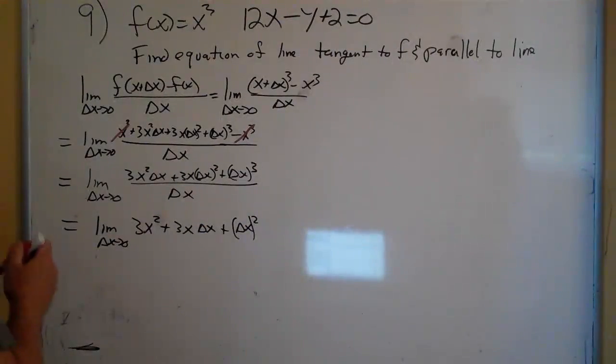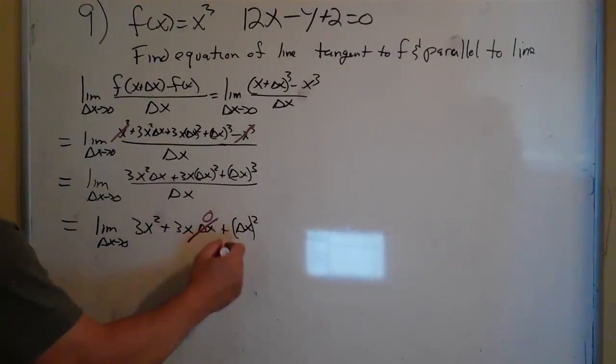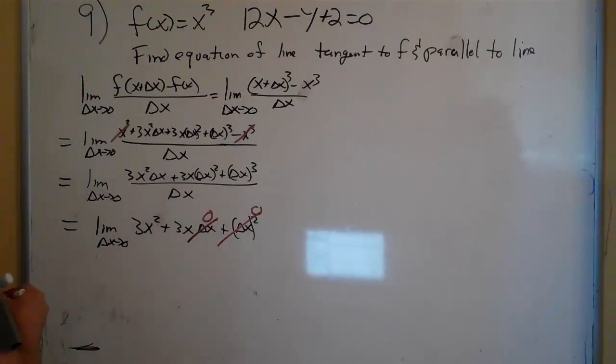Now, if delta x goes to 0, this is a 0, that's a 0, so all we would have left is 3x squared, and that is what our f prime of x is going to be.